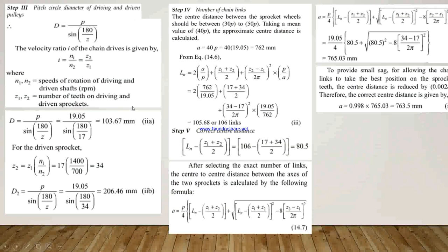In step 3, we calculate the pitch circle diameters of the driving and driven sprockets. The formula is: D = P / sin(180° / Z), where Z is the number of teeth. For the velocity ratio: i = N1 / N2 = Z2 / Z1. With N1 = 1400 rpm and N2 = 700 rpm, the velocity ratio is 2, giving Z2 = 2 × Z1.